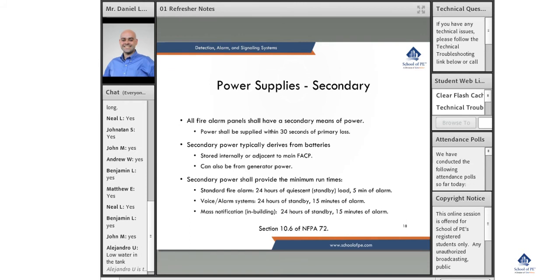The code actually does have a note that the battery calculations must include a minimum 20% safety margin above the calculated amp hour capacity required. So whatever is calculated, the code requires you to put in a safety margin. That is section 10.6.7.2.